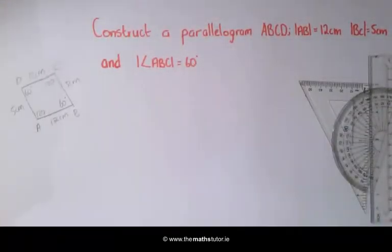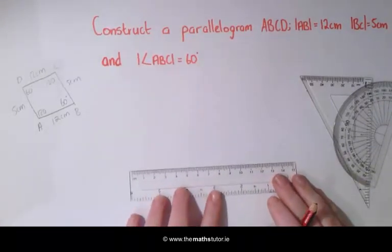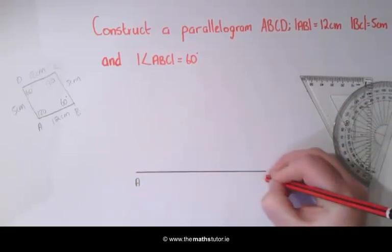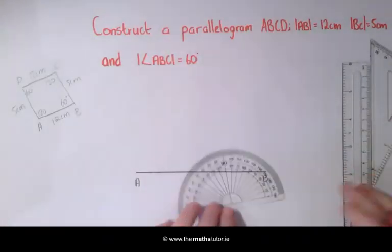The first thing we are going to do is draw the horizontal line AB which is 12cm. We are then going to draw an angle of 60 degrees at B.